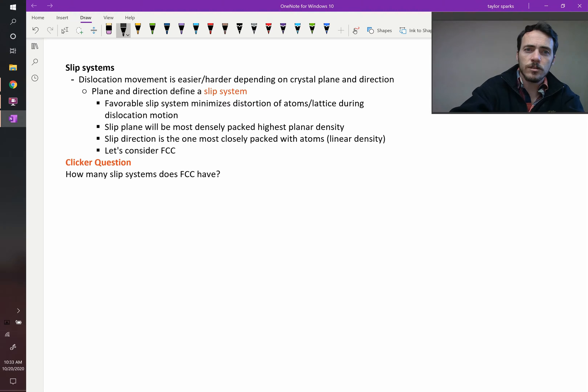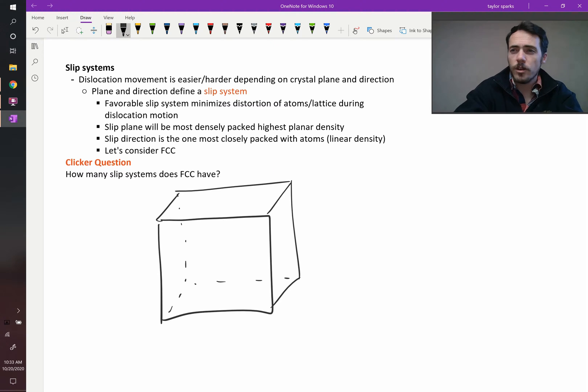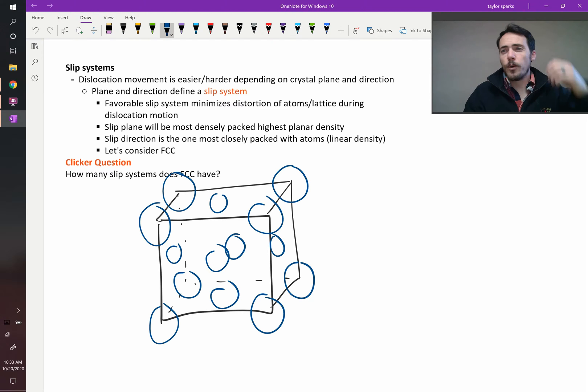Let's draw an FCC crystal to describe what I mean. If we start with a cube, now we're going to draw our atoms. What we're looking for in a slip system is the highest planar density plane, and then within that plane, the highest linear density direction. Those will constitute a slip system.